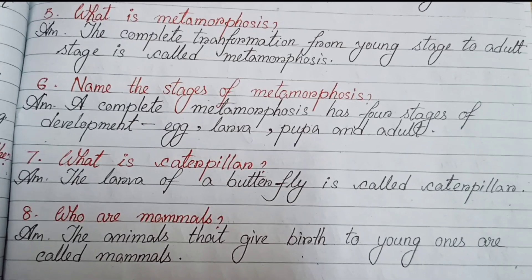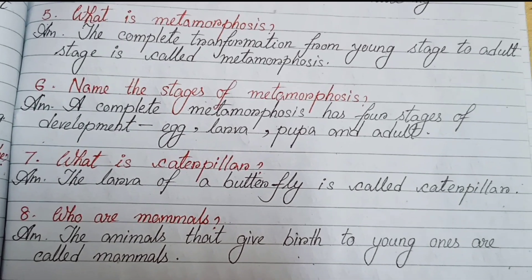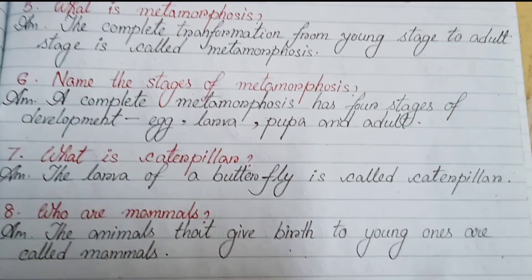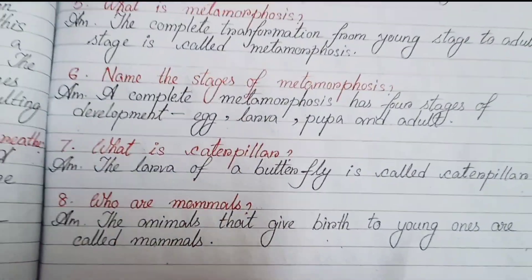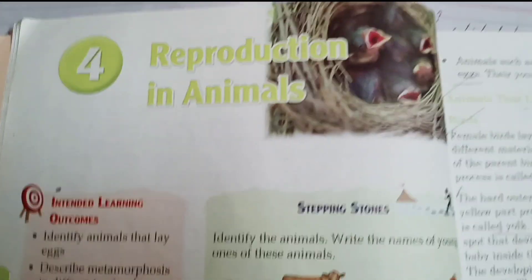Question seven: What is a caterpillar? The larva of a butterfly is called a caterpillar. Question eight: Who are mammals? The animals that give birth to young ones are called mammals.